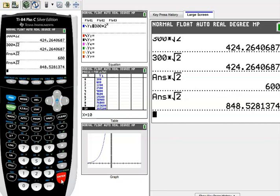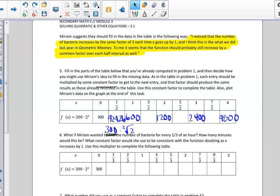So after an hour and a half, we should have 848.52, approximately, and 53 if we round up bacteria. So 848.53. I'm going to use a different color. So that's 848.53. And we continued along those lines and we filled in this table using Miriam's strategy.